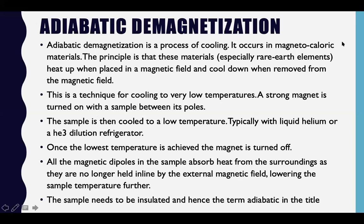Now there is another important process called adiabatic demagnetization. This is also a process of cooling and is very important — it is the process by which general refrigerators work. It occurs in magnetocaloric materials. The principle is that these materials heat up when placed in a magnetic field and cool down when removed from the magnetic field. Alternating the magnetic field on and off creates a cooling effect inside those materials, and this can achieve very very low temperatures.